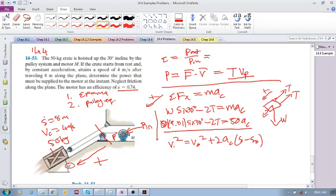V squared is V original squared plus 2AC(S minus S0). What was the final velocity? That's 4 squared. So, this V is VC. It's the final velocity after the crate has moved 8 meters. The original velocity was 0. We're looking for this acceleration. Now, take note here. This is quite important. It's moved up the incline 8 meters.